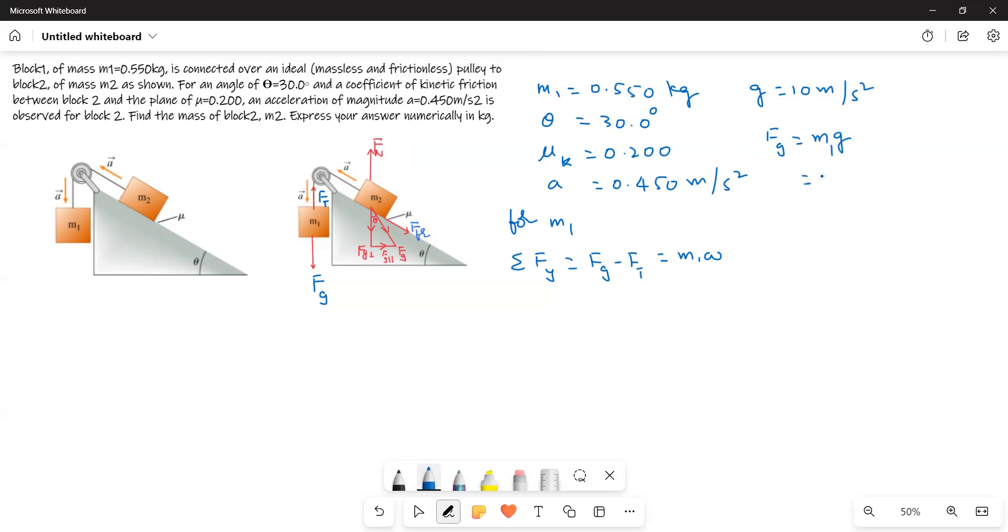So that is equal to 0.550 kilograms times 10 meters per second squared. So therefore, this is equal to Fg is equal to 5.5 newtons.